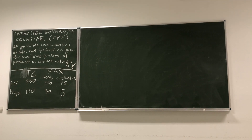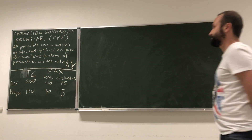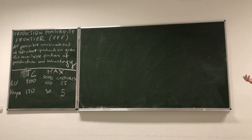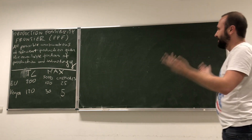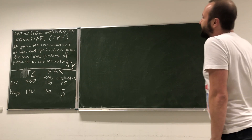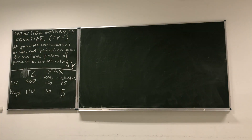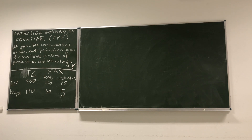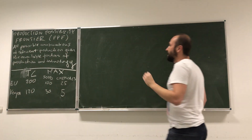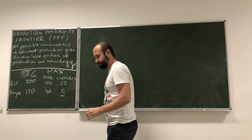The next tool we're going to introduce is the production possibility frontier. I hope it's not an introduction — you should have this from your microeconomics class. The production possibility frontier represents all possible combinations of efficient production given available factors of production and state of technology.